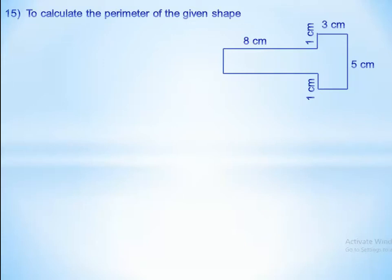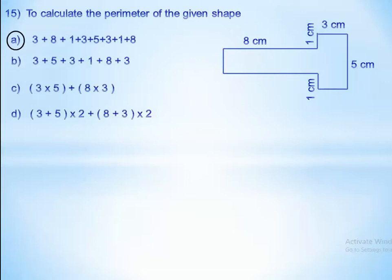To calculate the perimeter of the given shape, we add all sides. Remember: perimeter means the frame — the outside, never the inside. So we add: 3 plus 5 plus 1 plus 3 plus 1 plus 1 plus 8 plus 8 plus 3. We have three 3s, three more 3s — wait — one 5, two 8s, and two 1s.